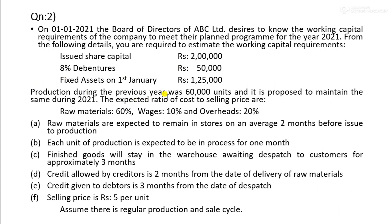Production during the working year: the previous year was 60,000 units and it is proposed to maintain the same level during 2021. Last year, 60,000 units were produced. The expected ratio of cost to selling price are: raw materials 60%, wages 10%, and overheads 20%.